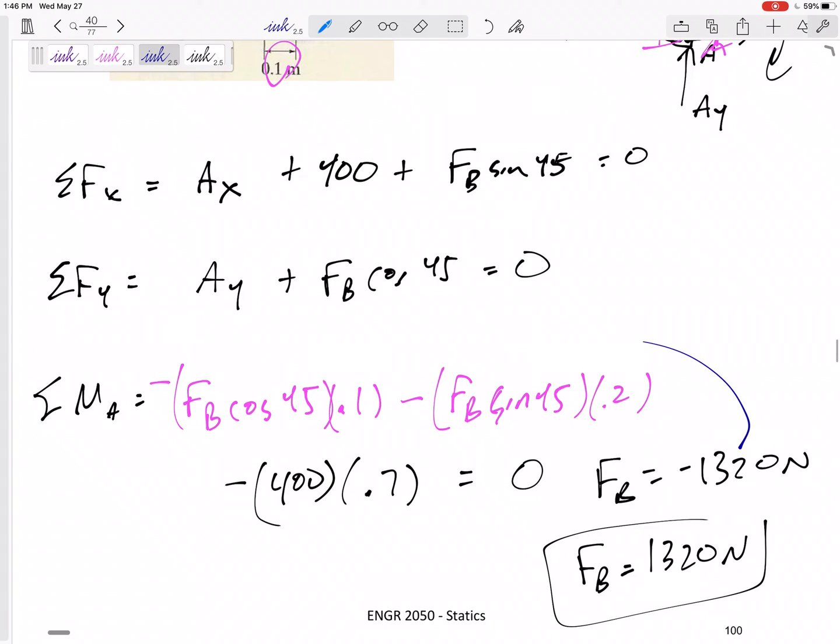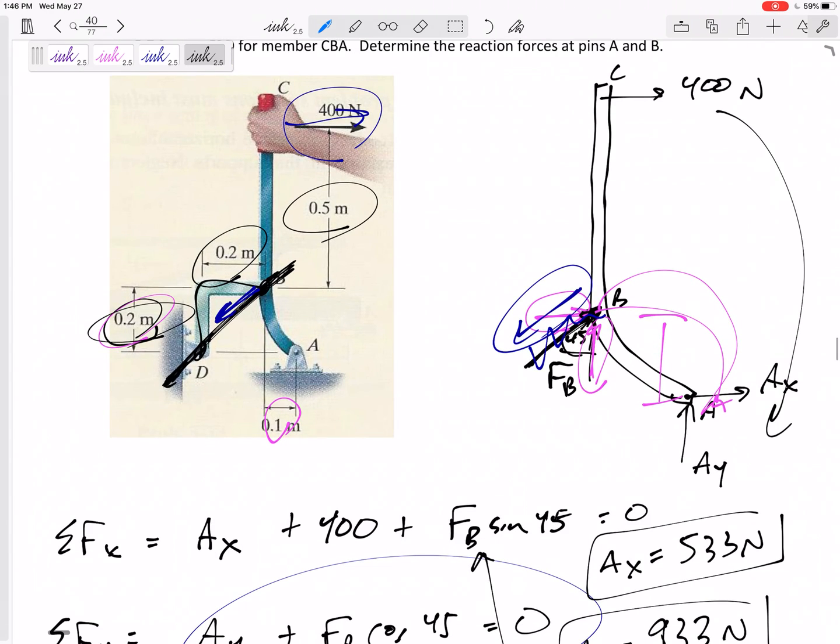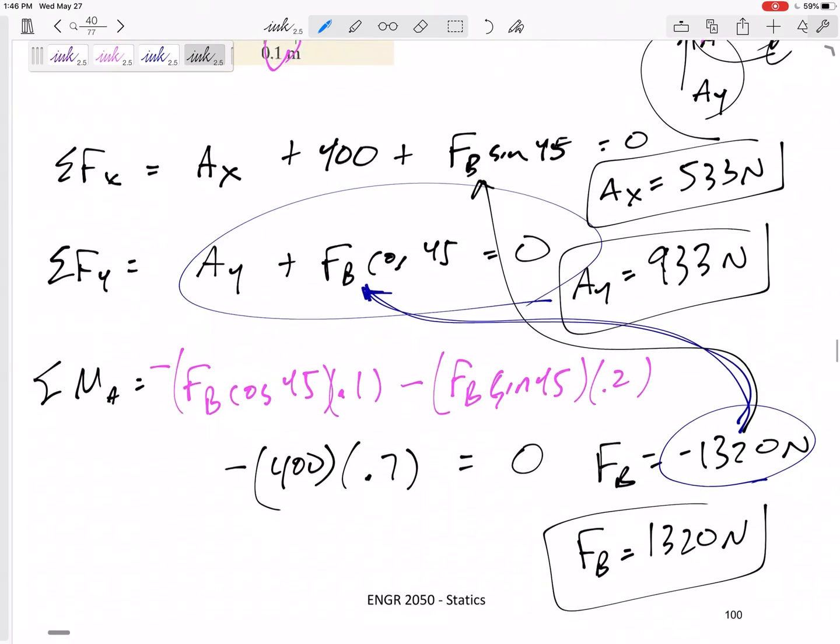Now, I'm going backwards to an equation I've already written. I wrote that equation in the wrong direction. I need to plug in negative 1320 and I'll get AY positive 933 Newtons. Plug in negative right there and I would get AX positive 533 Newtons. So those are my answers. Box in those final magnitudes and make sure everything is drawn the correct direction on your free body diagram.